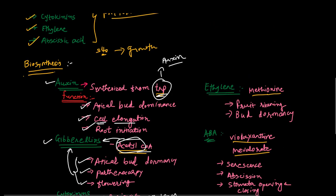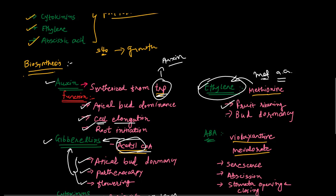The next hormone is ethylene. Ethylene biosynthesis is from methionine, an amino acid found in plants. Ethylene has a role in fruit ripening, degreening of fruit, and maturation. Another important function is that it promotes bud dormancy.